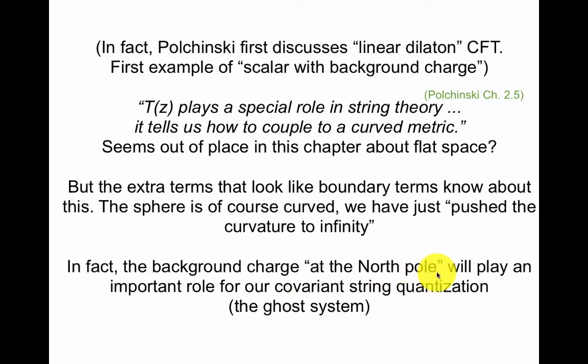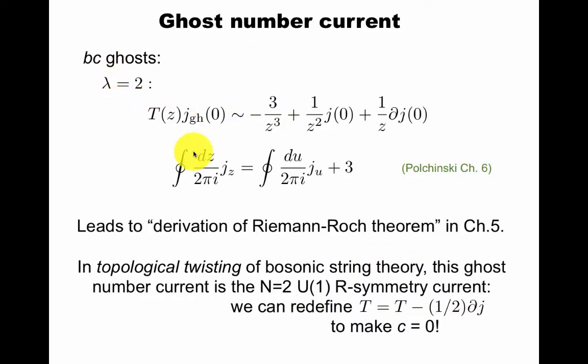For bc ghosts, we get a factor of three here. So that means that the integral over some current j actually transforms with a shift of three. This corresponds to the need to insert three c ghosts in chapter six when we compute correlation functions. Properties of the ghost current lead to the Riemann-Roch theorem, which is very important. And in topological twisting, which I will not talk much about, you can use this ghost current to redefine the stress-energy tensor to actually get vanishing central charge. So this is an advanced topic, but it's of great interest.